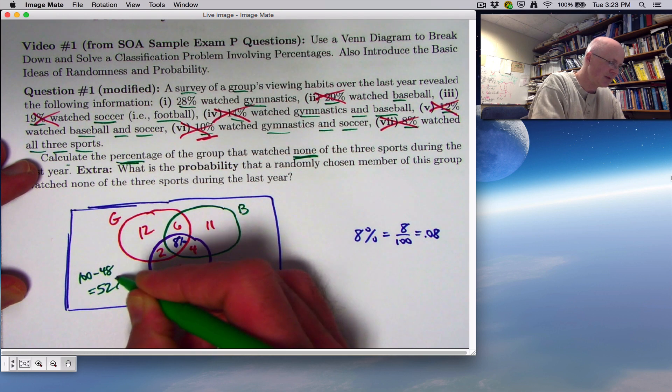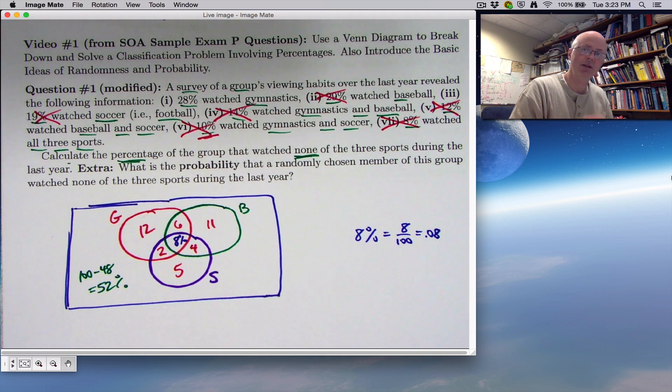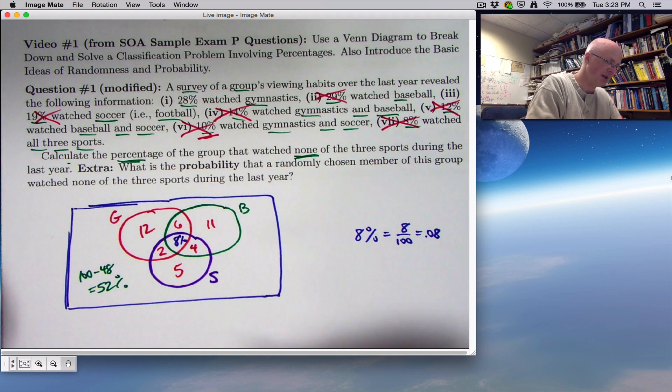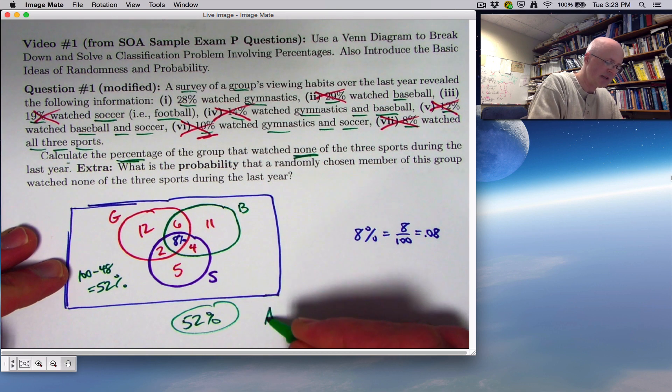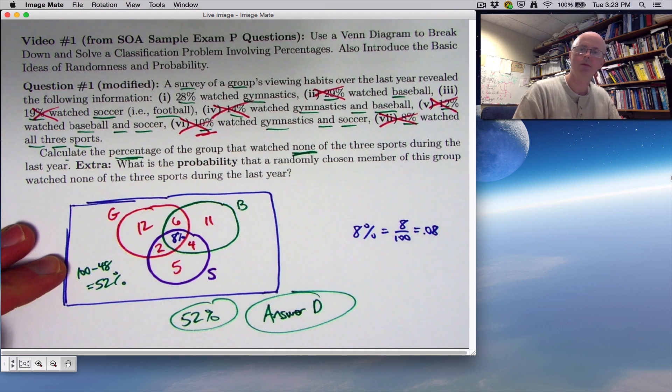I'll do it in my head here. 12 plus 6 is 18, plus 11 is 29, plus another 10 there for those two is 39, plus 4 is 43, plus 5 is 48. Outside here goes 100 minus 48, 52. That is representing a percent here, though you could imagine it representing a number of people if there are 100 people total. So the answer is indeed 52%. And that is answer D on the sample exam questions.